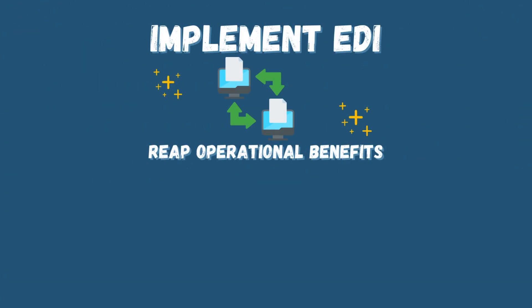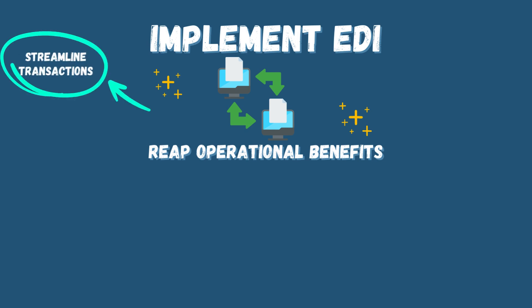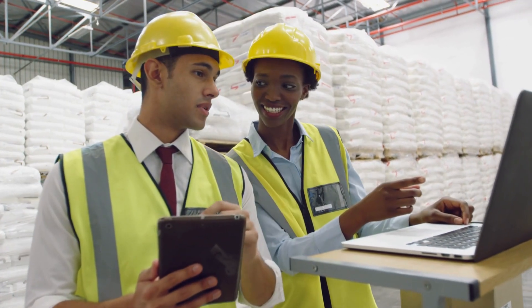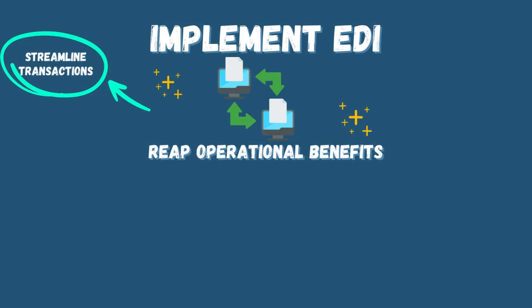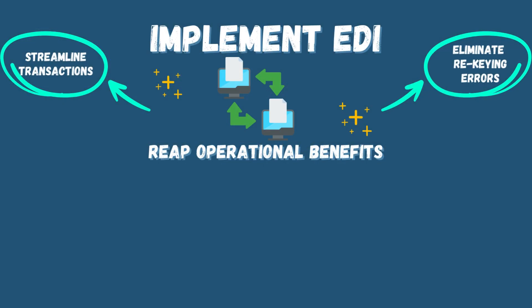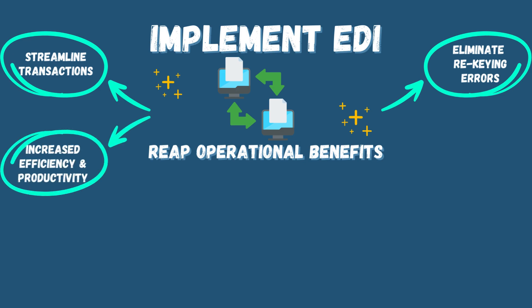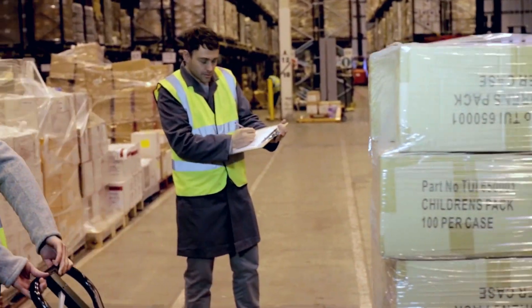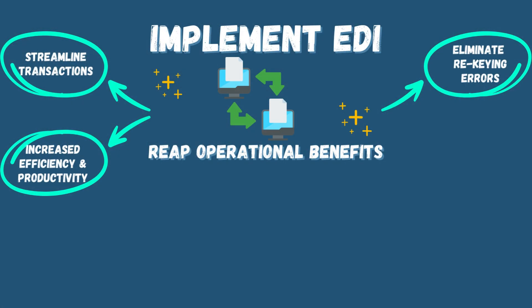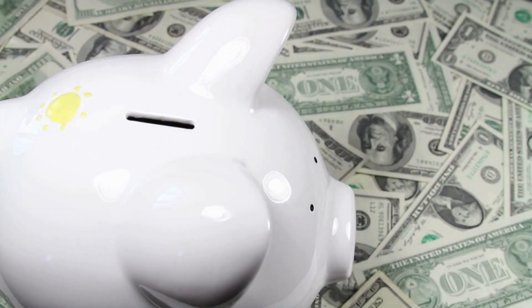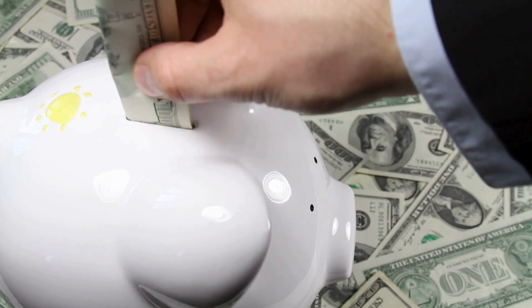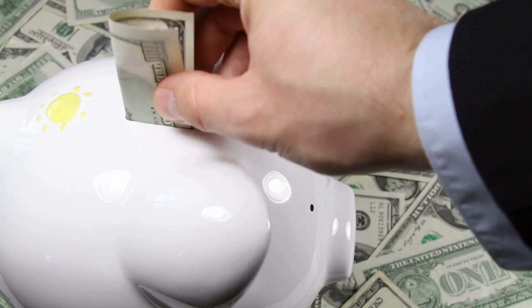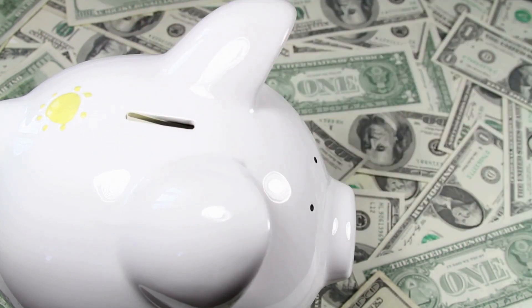Implementing EDI can revolutionize your business operations in several ways. First, EDI streamlines transactions by automatically exchanging documents, eliminating manual processes. Secondly, re-keying errors are eliminated as EDI ensures accurate and consistent data across all transactions. Third, there is increased efficiency and productivity from faster transaction processing times that enable businesses to manage higher transaction volumes without extra resources. Another benefit is significant cost savings resulting from automation and less paper-based processes. Savings are gained through cutting operating costs, as well as reducing printing, postage, and storage expenses.